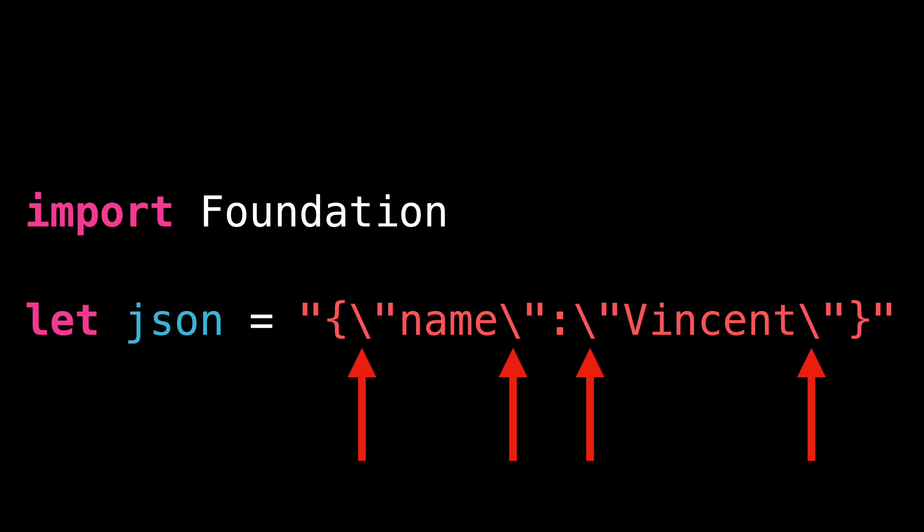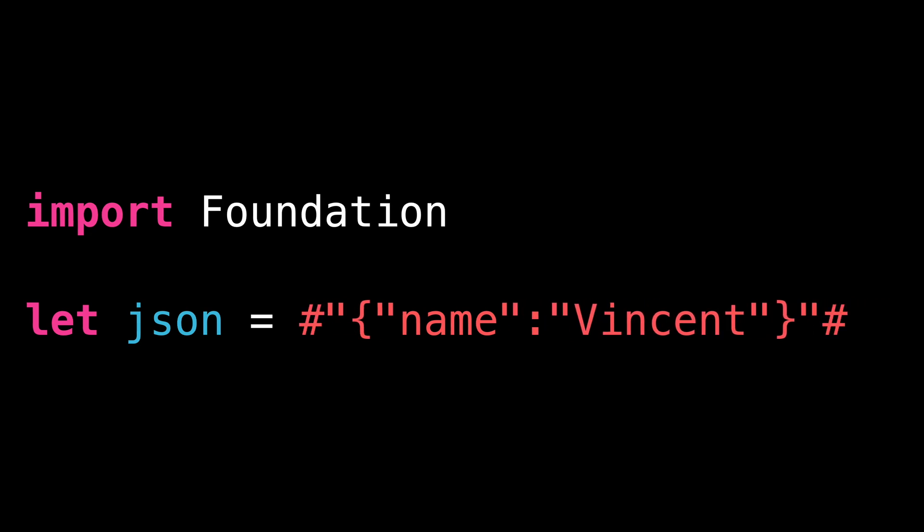Fortunately, Swift has the perfect feature to solve this issue. By adding a pound character at the beginning and end of the literal string, we're turning it into a raw string. And as you can see, in our raw string, we no longer need to escape double quotes characters, which makes the code much easier to read.